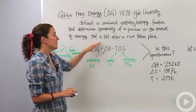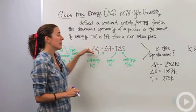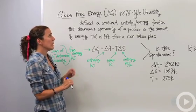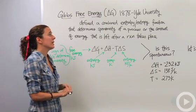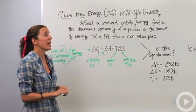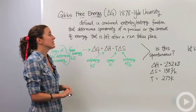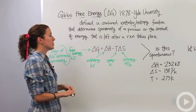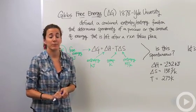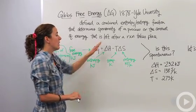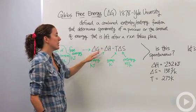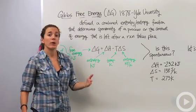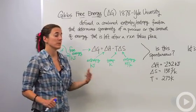He put them together into this formula. What he did was define a combination of enthalpy and entropy that determines the spontaneity of a process, along with the amount of energy left after the reaction takes place. After this combination we can get the amount of energy actually released or gained during the reaction.